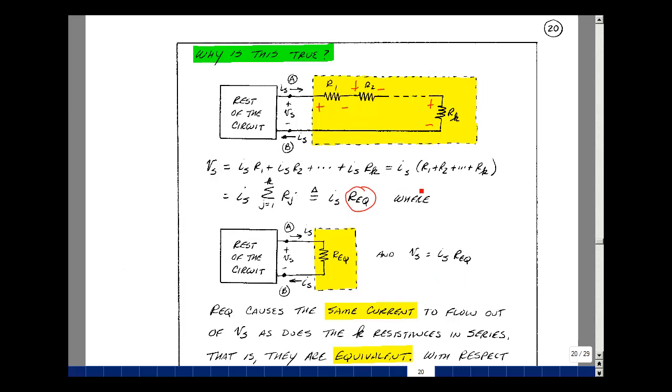I sub s times R1 plus R2 through R sub k. So we have the same results, therefore they're equivalent. They're equivalent at the terminals V sub s, in other words, terminals A and B.